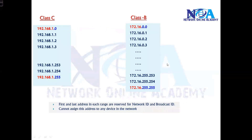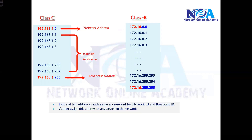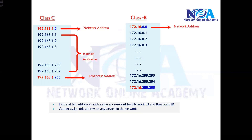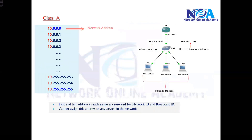If I take any C class example, the first address I cannot use — we call it the network address — and the last address also we cannot use because we call it the broadcast address for that network. Whatever addresses are in between we can use, and we call them valid addresses. Similarly, in B class the first address is the network address, the last is the broadcast, and the ones between are valid. The same applies to A class as well — the first and last are reserved for network ID and broadcast ID, and the addresses in between are valid IP addresses.